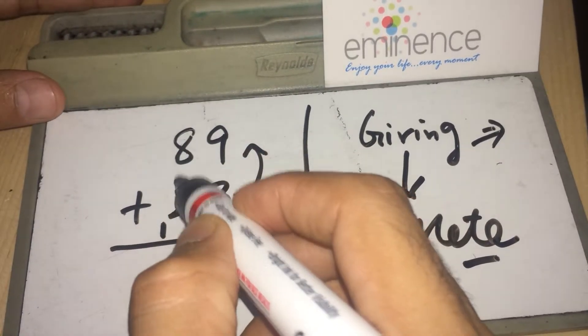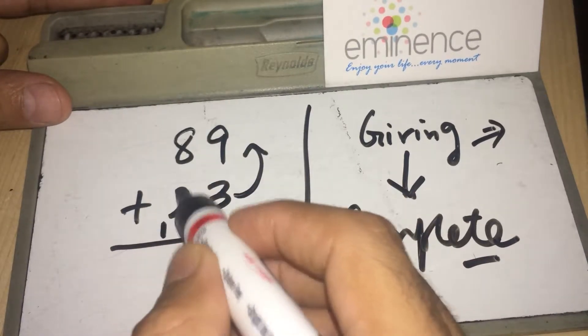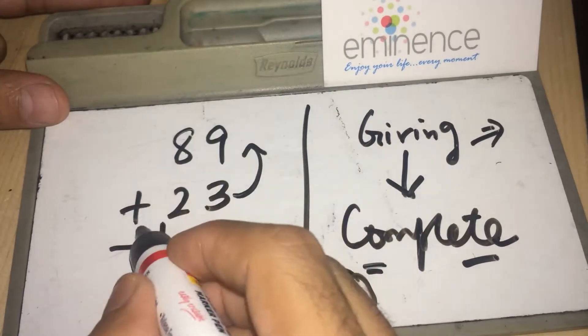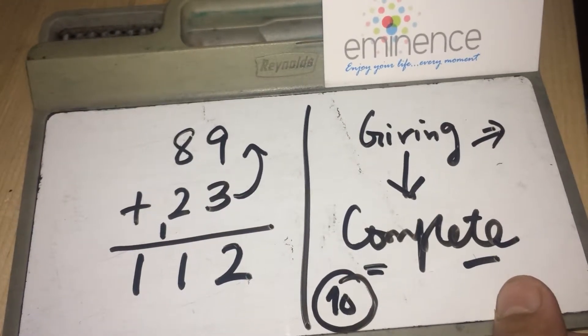8 needs 2 to get completed, so 2 gives complete of itself to 8. And what remains in this portion is 1 and you have to carry forward 1, so answer is 112. So you know this way of doing,